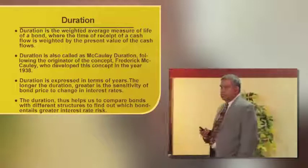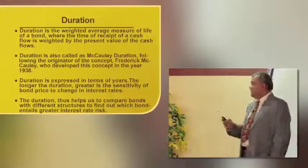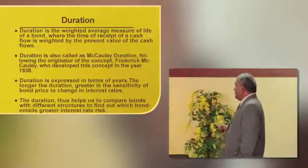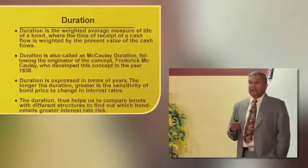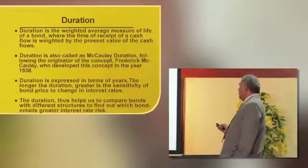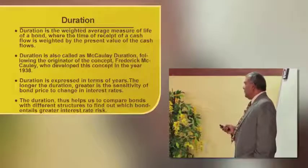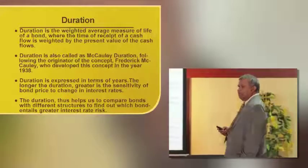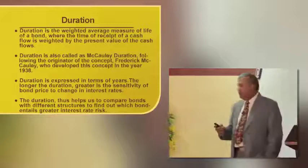Duration is a weighted average measure of the life of a bond where the time of receipt of cash flows is weighted by the present value of the cash flows, using the net present value and weighted average method. It is also called Macaulay duration, following the originator of the concept, Frederick Macaulay, who developed it in 1938. Duration is expressed in years, while modified duration is expressed in percentage. The longer the duration, the greater the sensitivity of bond price to changes in interest rates, helping compare bonds with different structures to find which entails the greatest interest rate risk.